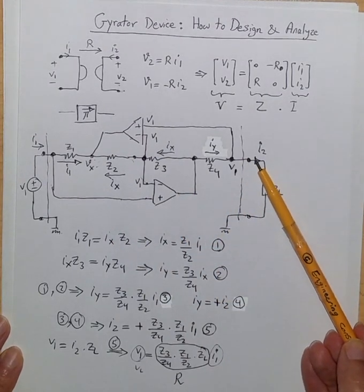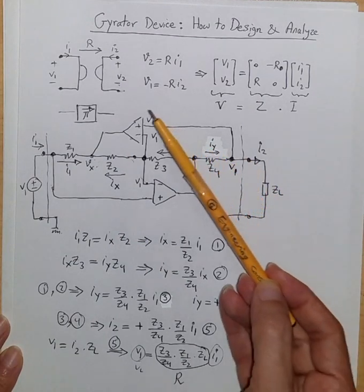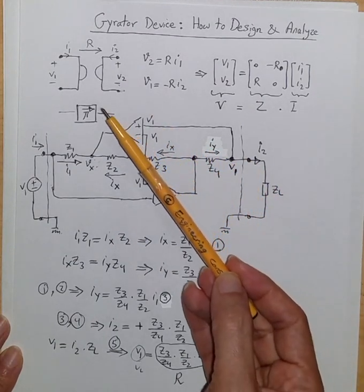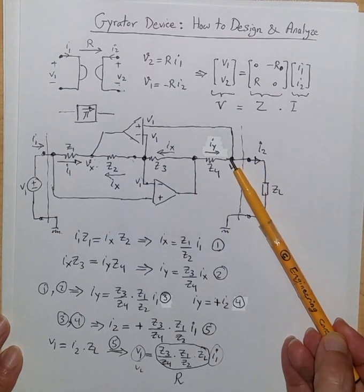And this is the current I2 in this way. I'm showing it this way but for the actual relationship that is needed for the gyrator the current has to be going inside.